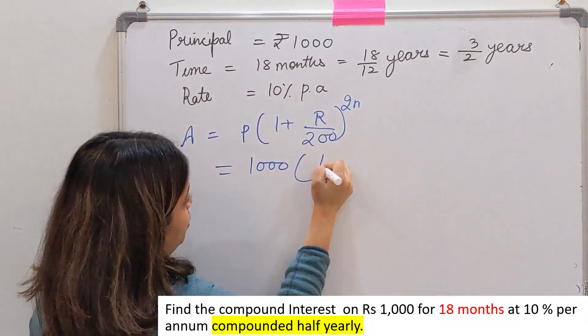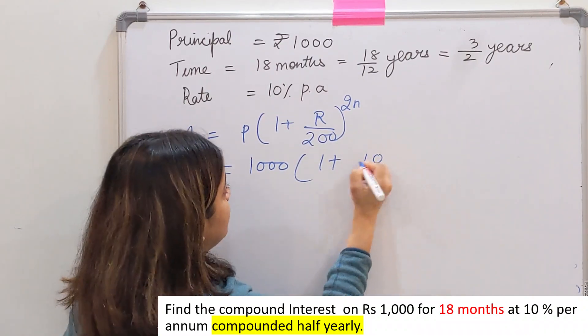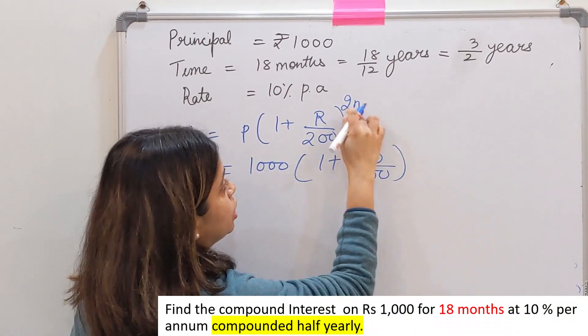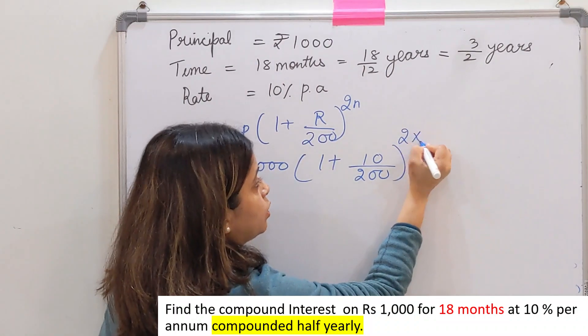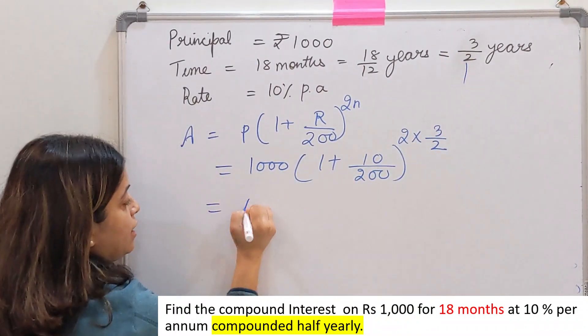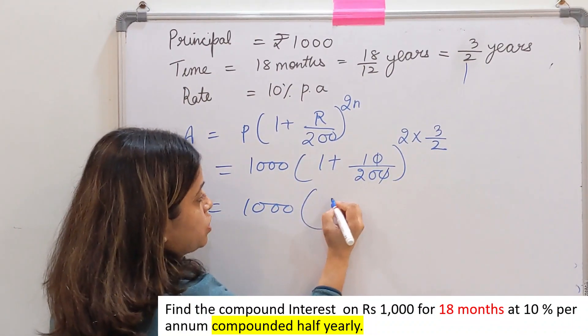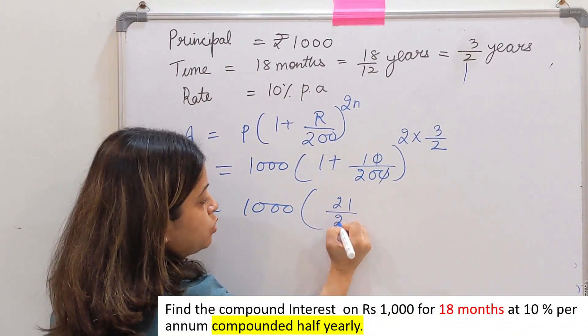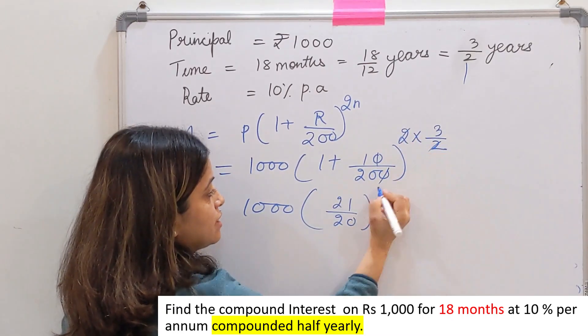अगला step कुछ नहीं है, बहुत easy. Value put करेंगे. R की value क्या है? 10 by 200, easy. 2N क्या बन जाएगा? 2 into N की value, मैंने बताया था, यह यह वाली होती है, 3 by 2. Solve करेंगे. Come on, let's see कौन सबसे पहले करता है which is 21 by 20 power, यह भी cancel, 3.